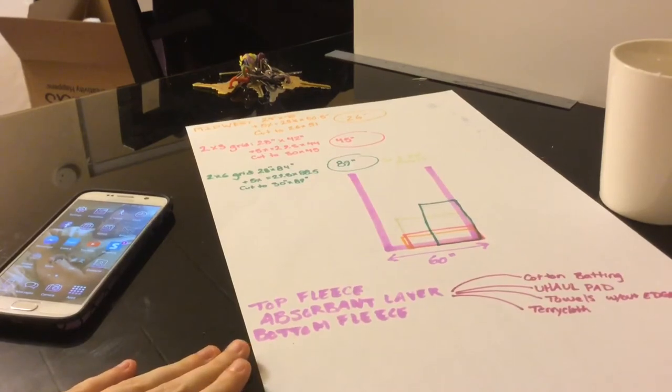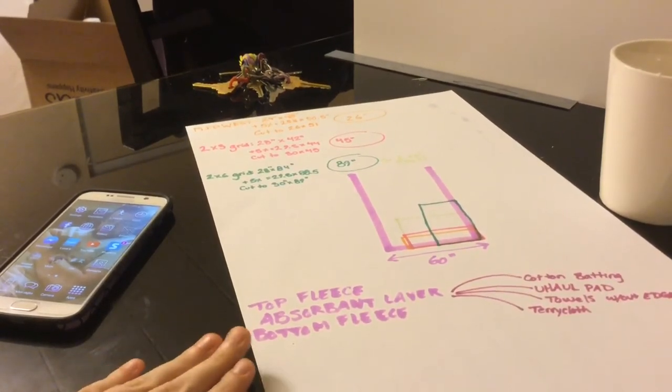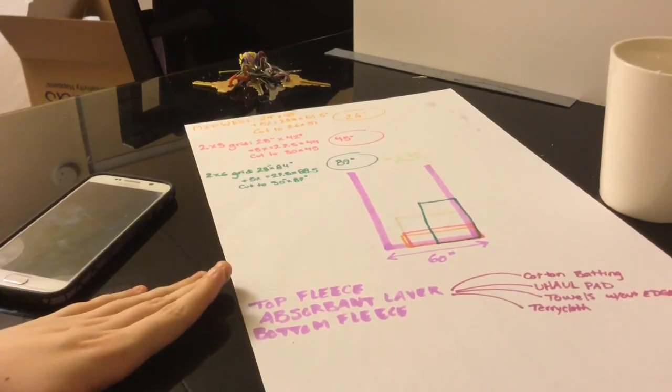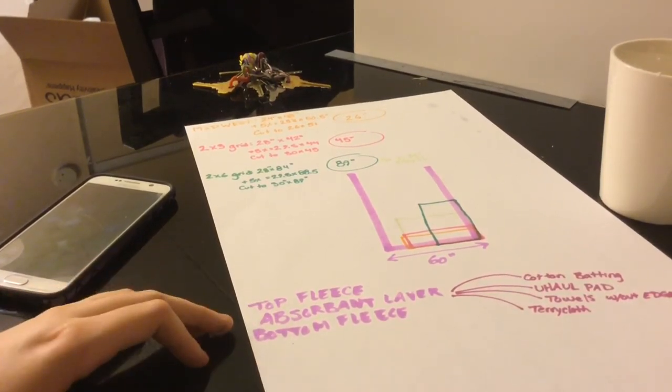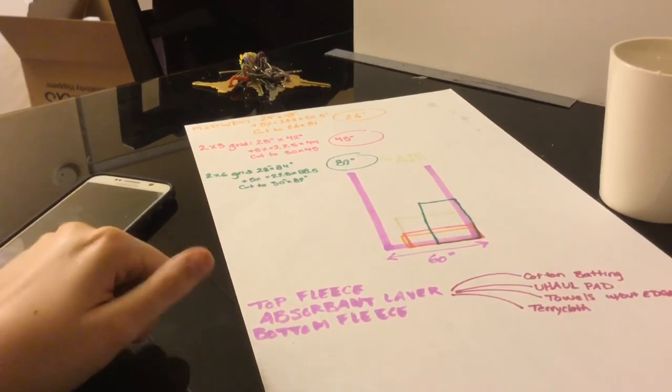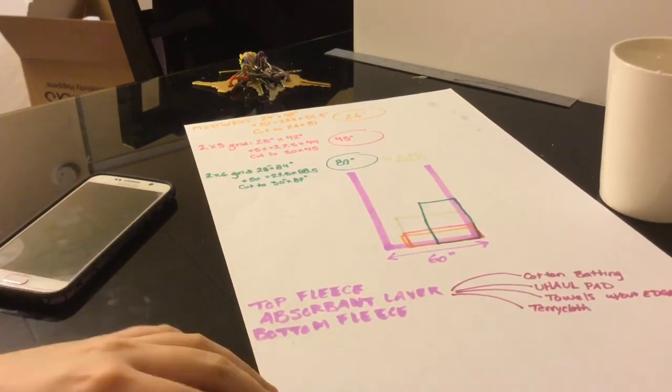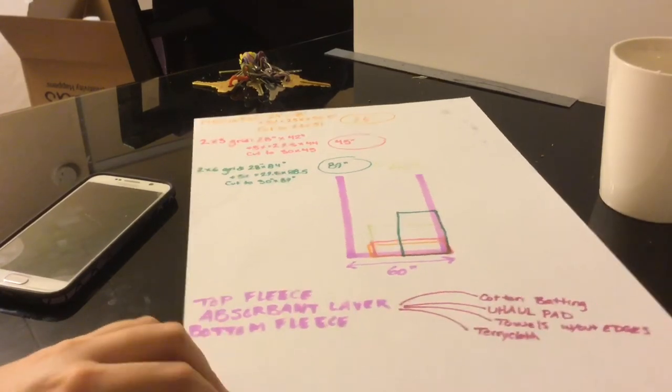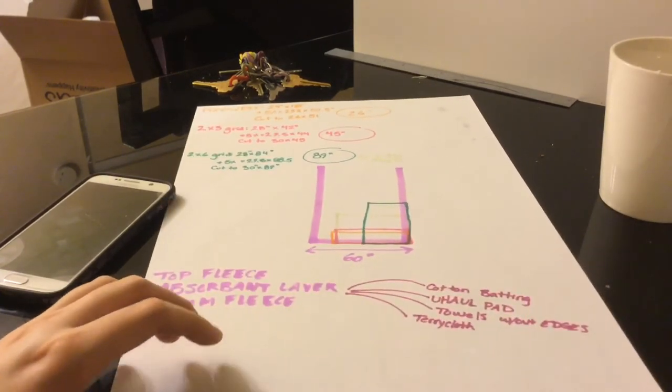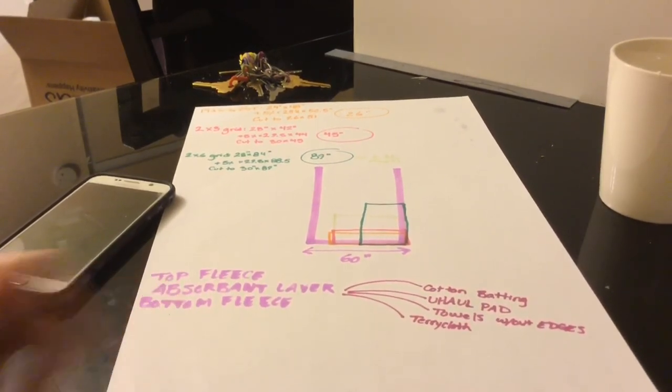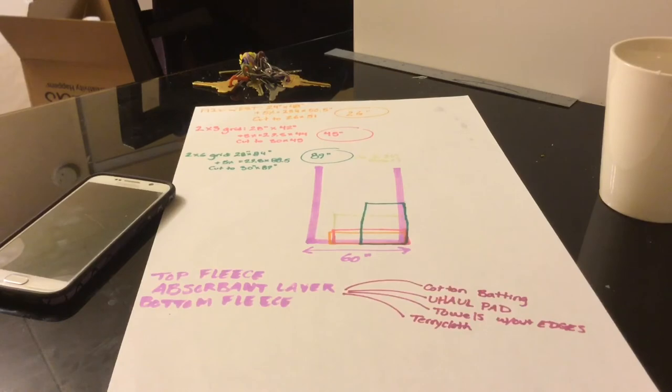So, you're going to need a top fleece, an absorbent layer, and a bottom layer. Generally, the top layer is printed and the bottom layer is not. You could certainly have both sides printed. You could certainly have both sides plain. You can even get... They make fleece with little... Like, it looks kind of like bubble wrap. It's cool. It's textured. I have one liner for myself that's like that. You guys might have seen it in previous videos. But, the absorbent layer is what I'm going to talk about next for prep work, because you need to decide what you want to use.